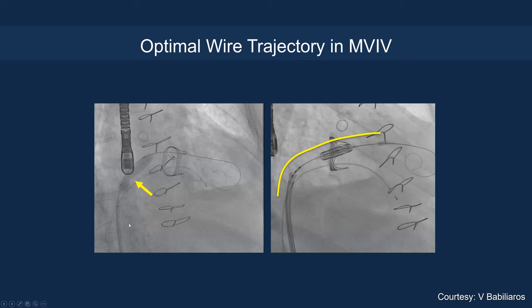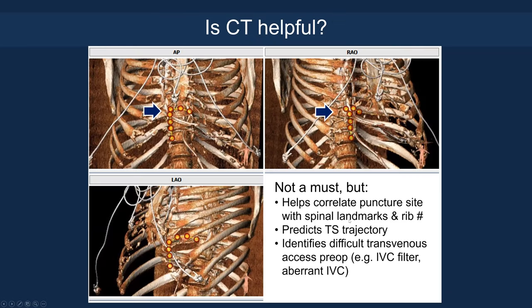For optimal wire trajectory, an inferior-posterior puncture is shown — you can see the balloon waisting where the septum was, and the wire tracks smoothly rather than buckling. Regarding CT guidance: we typically don't use CT to guide transeptal access, but fusion imaging can be helpful. CT can also identify tortuous IVC, tortuous spine, or patient scoliosis to help predict transeptal trajectory on RAO, AP, and LAO views, as well as identify any IVC filter or abnormal IVC anatomy.